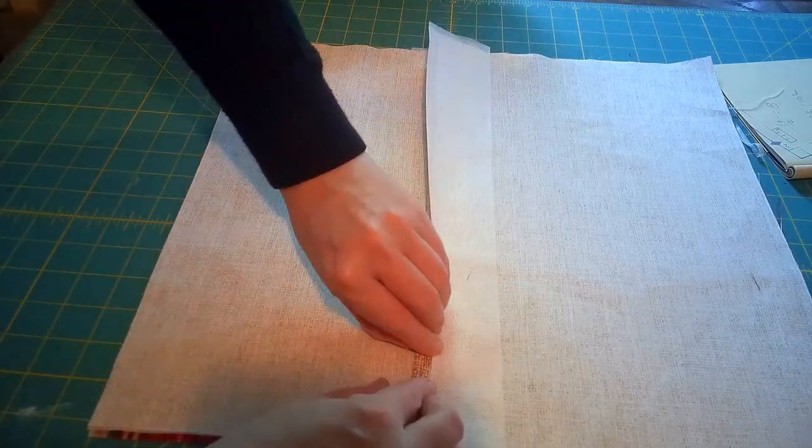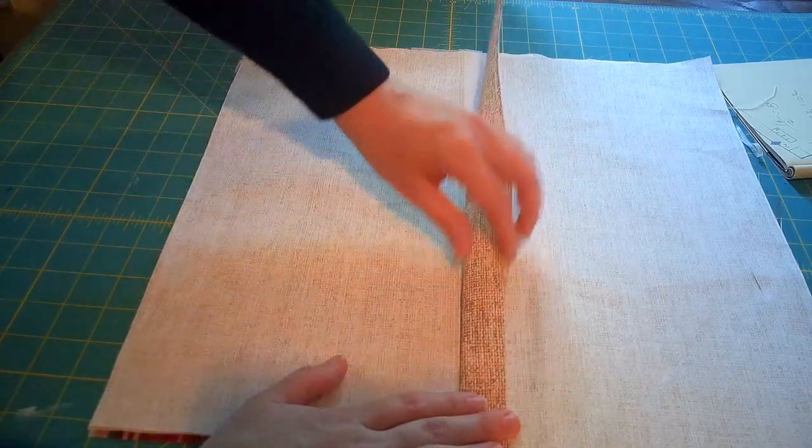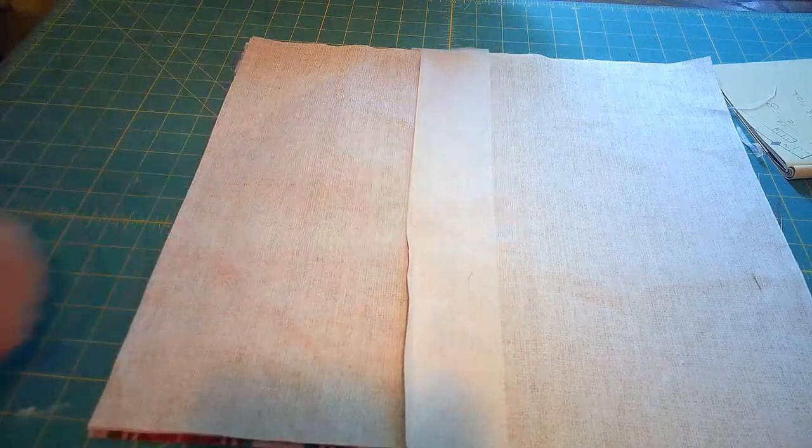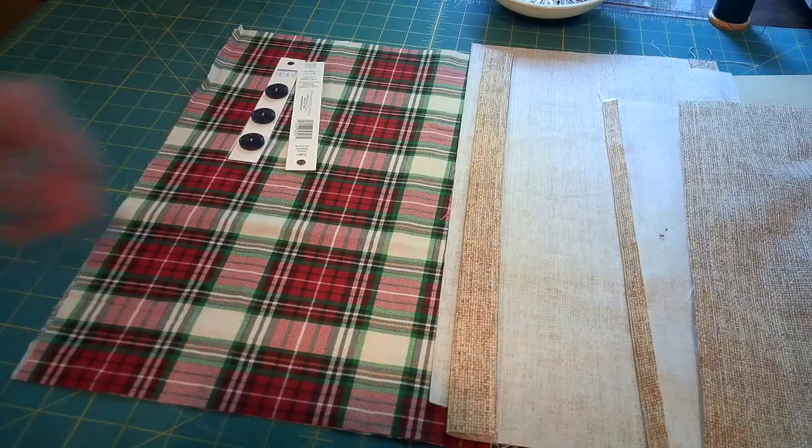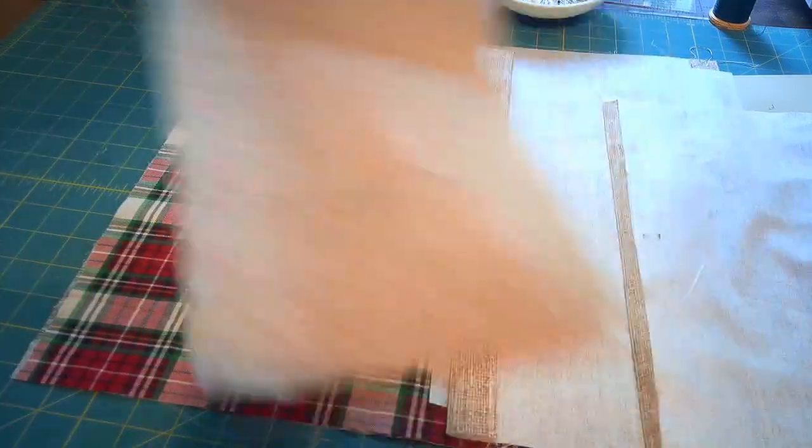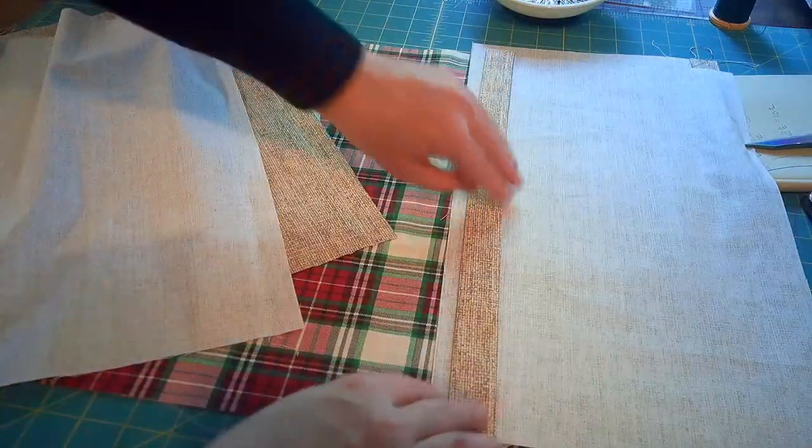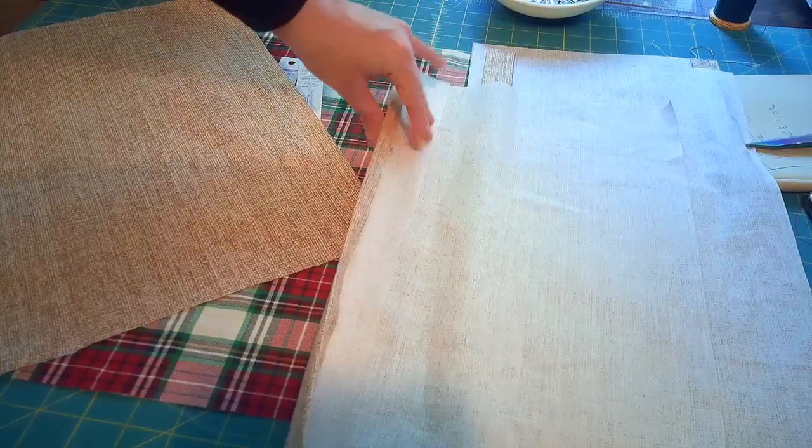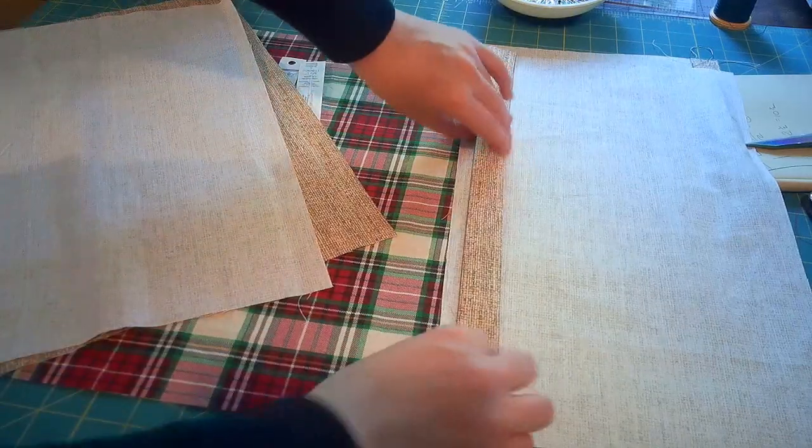Then what you need to do is attach your interfacing. Here I've fused it because I have just cheap fusible interfacing, and then I will turn it in a quarter of an inch and then I will fold it over to meet the other edge. So I used all the back pieces. Here I sewed a quarter of an inch in and then I pressed that down.